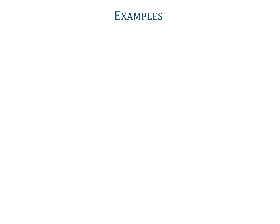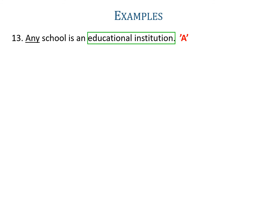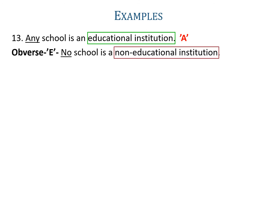Example thirteen: 'Any school is an educational institution.' Here any is used, so it is an A-proposition. Its obverse is E. Since the given proposition is in a singular term, the obverse should also be in a singular term. The predicate is educational institution, so its complementary will be non-educational institution. So we write the obverse as 'no school is a non-educational institution'.